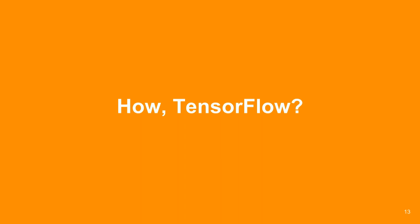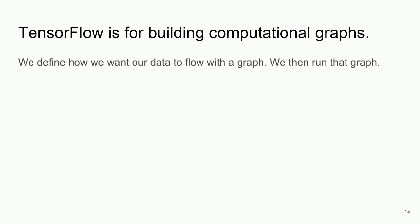That's the what and the why, but what about the how? How is TensorFlow structured? This is the way I wish someone had explained it to me when I was first picking up the framework. TensorFlow is for building computational graphs — we define the way our data is going to run through the graph, and then we run that graph.